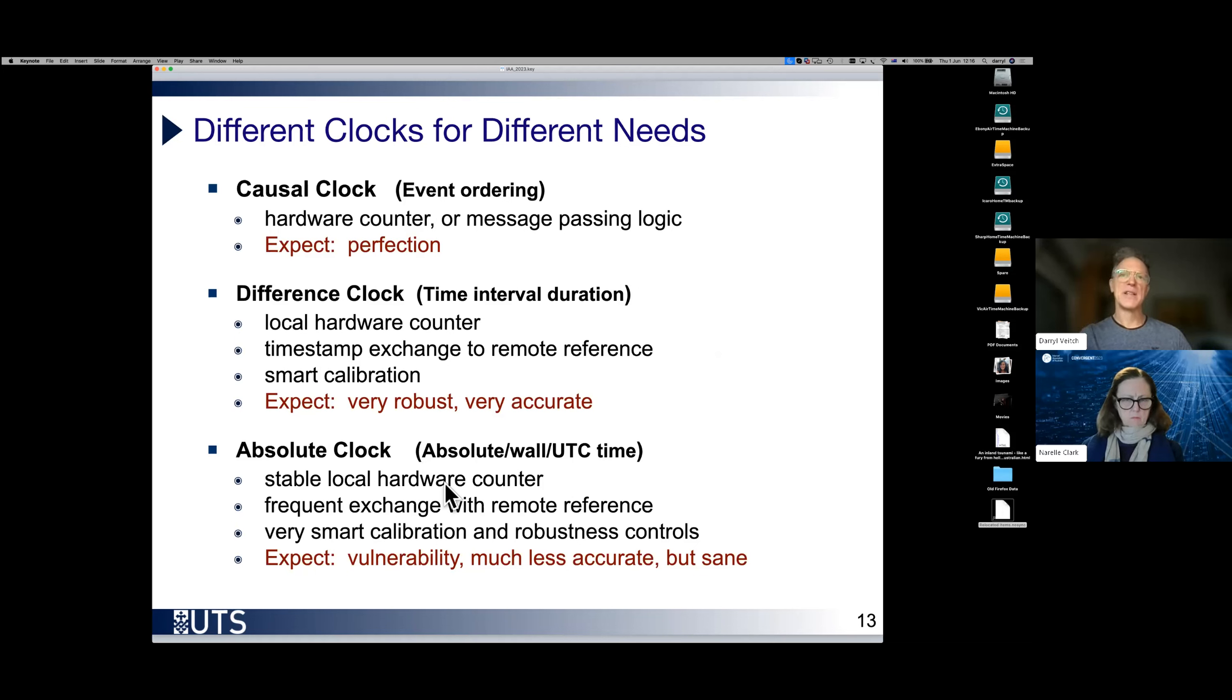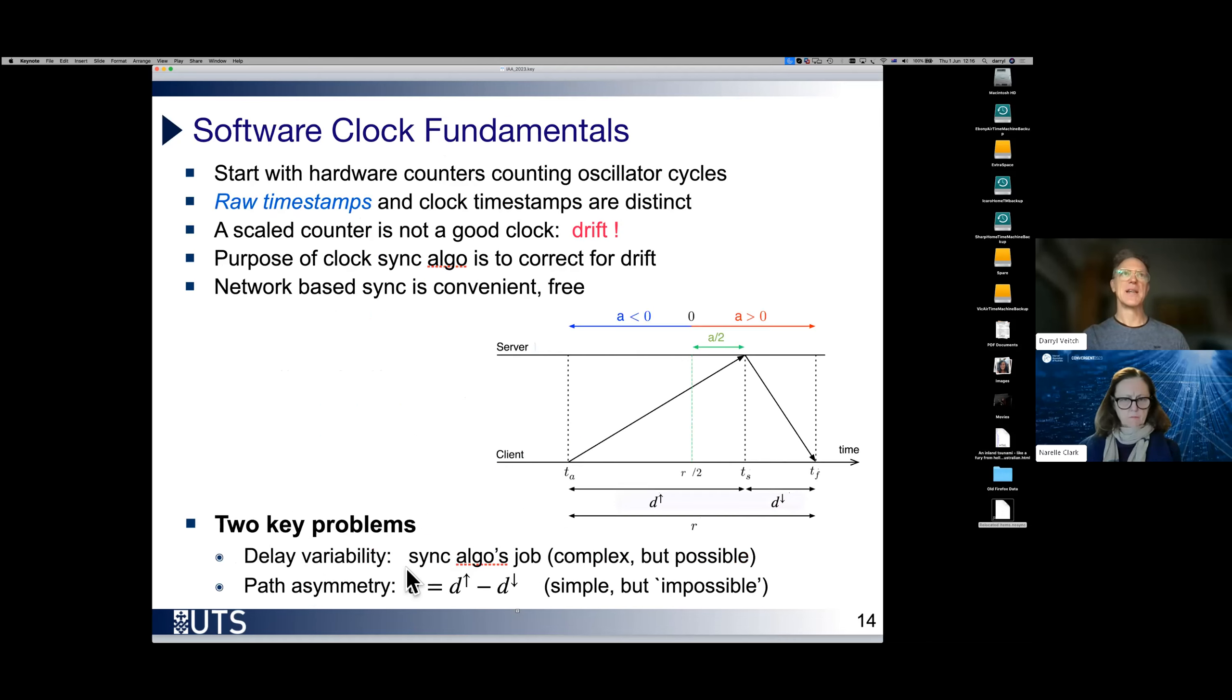The clock we normally think about is an absolute time clock. You know, we read the clock on a watch, we read it at the time on the UTC time scale. This is a much harder job. To do this well, we need ideally a more stable hardware counter, more frequent exchanges with remote reference, really smart calibration, and clever robustness design. What we can expect out of this is something which should be sane, but nonetheless is much less accurate and more vulnerable than a difference clock.